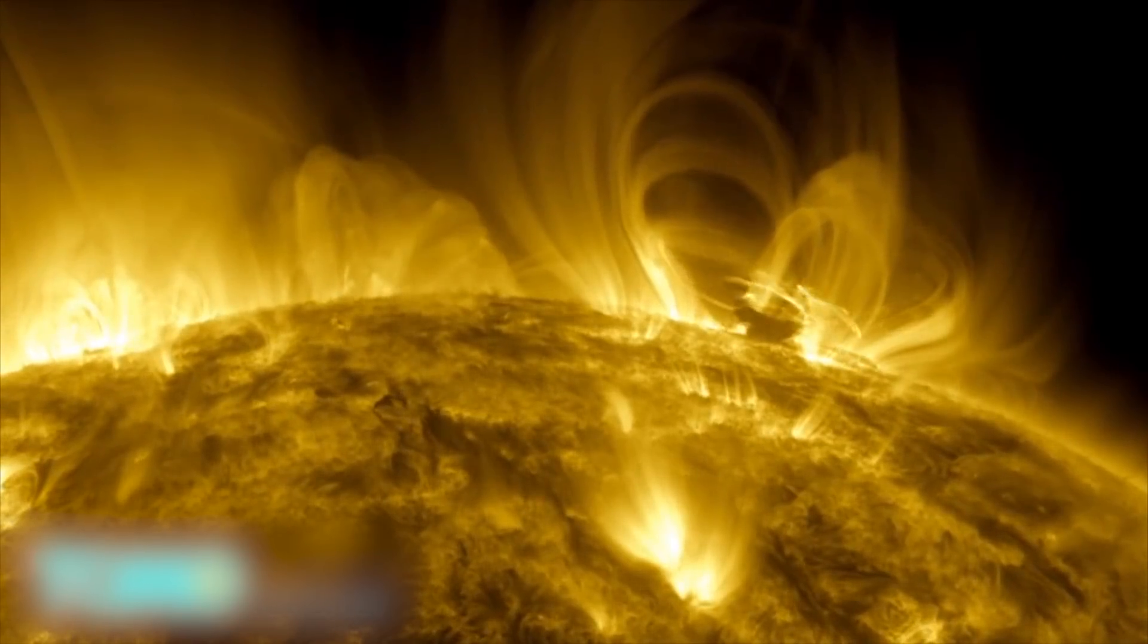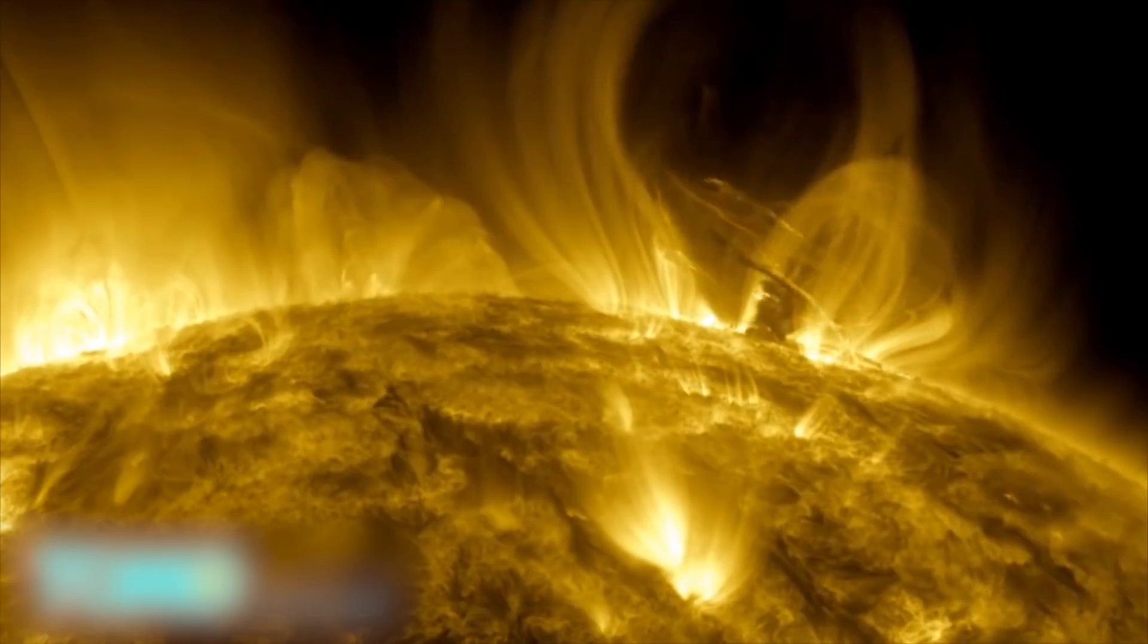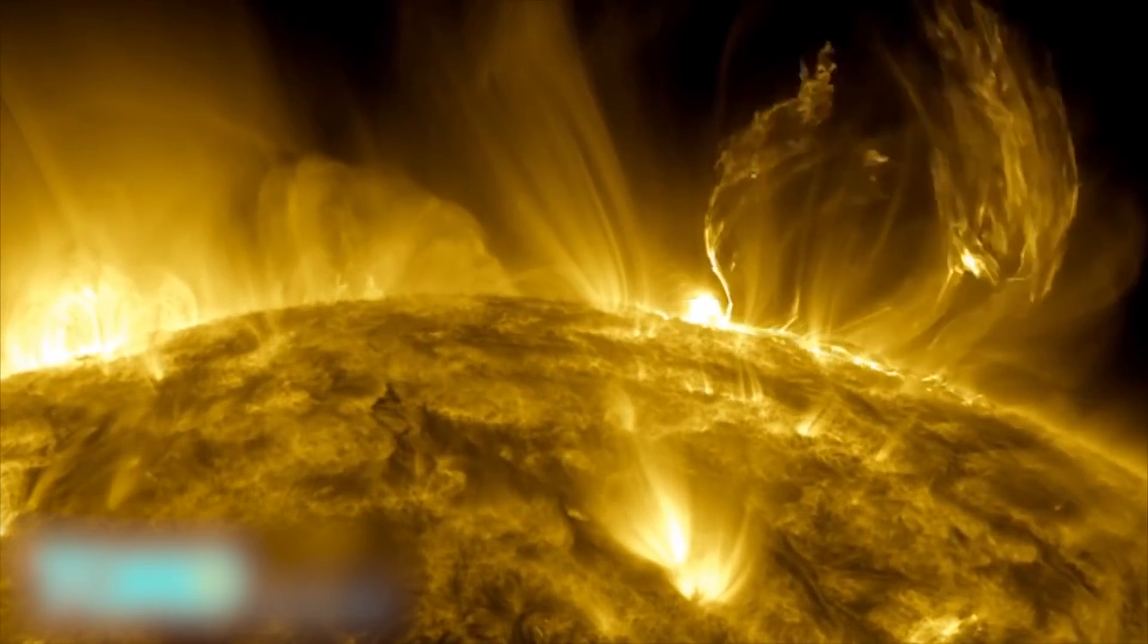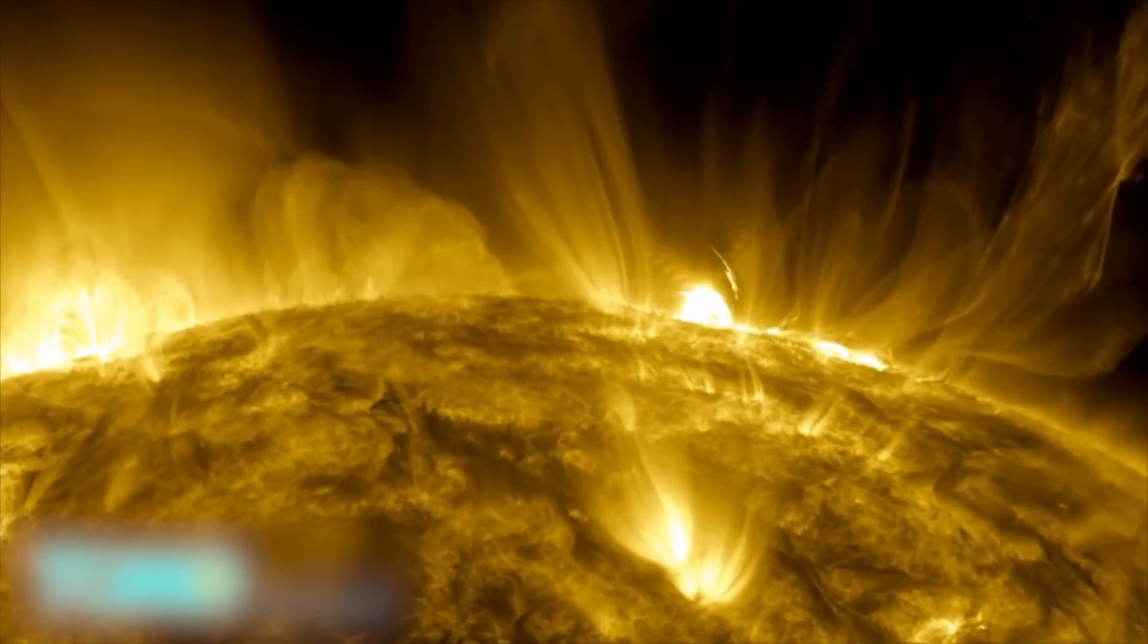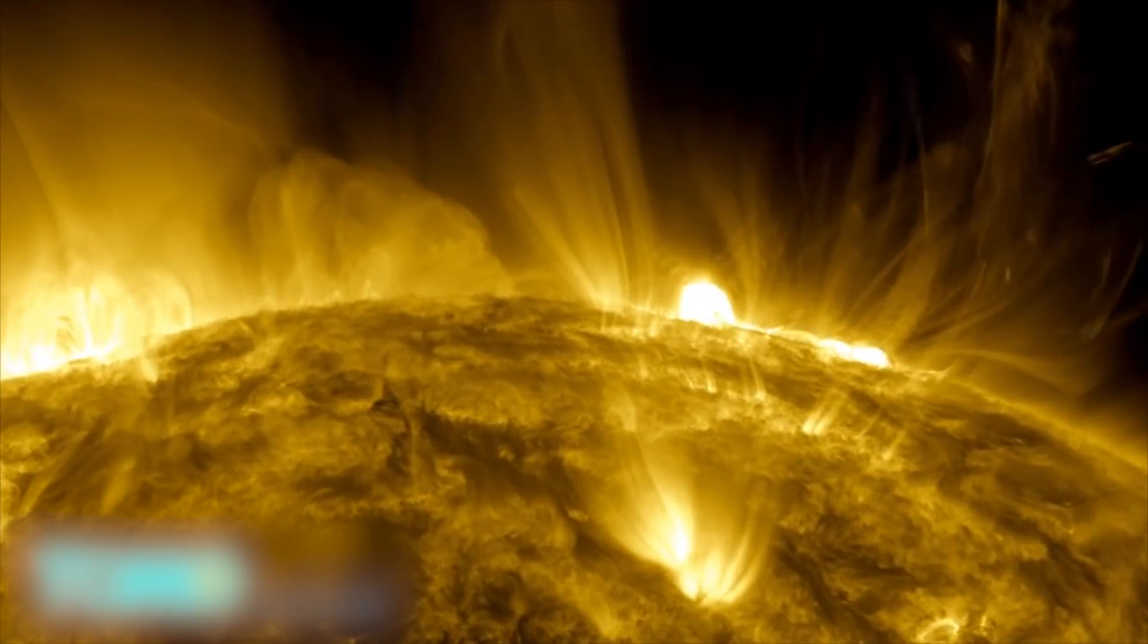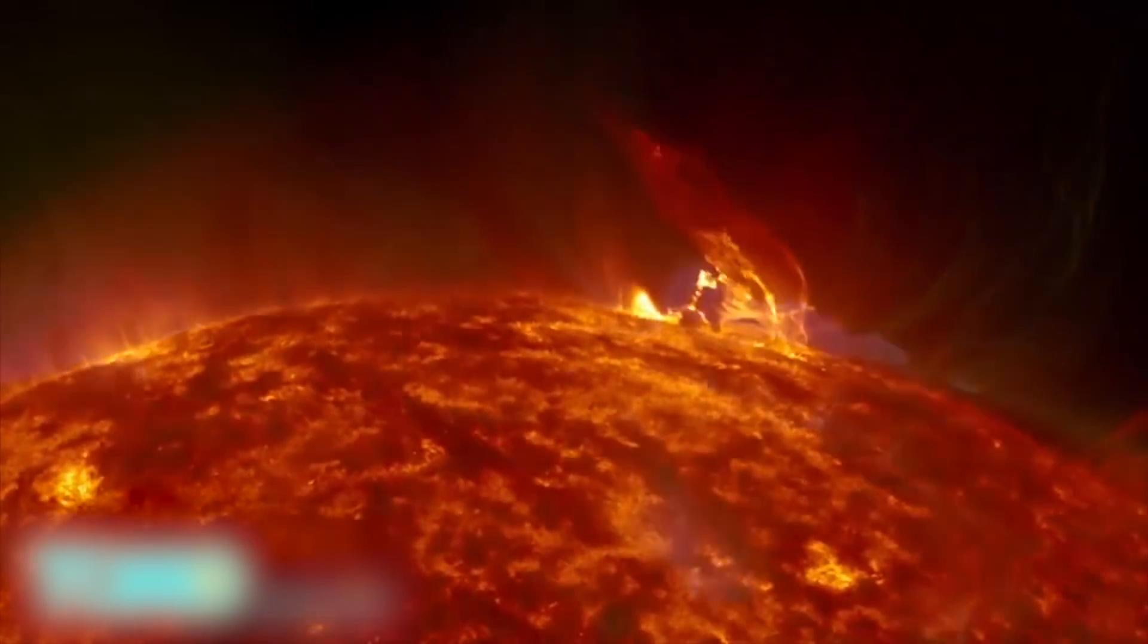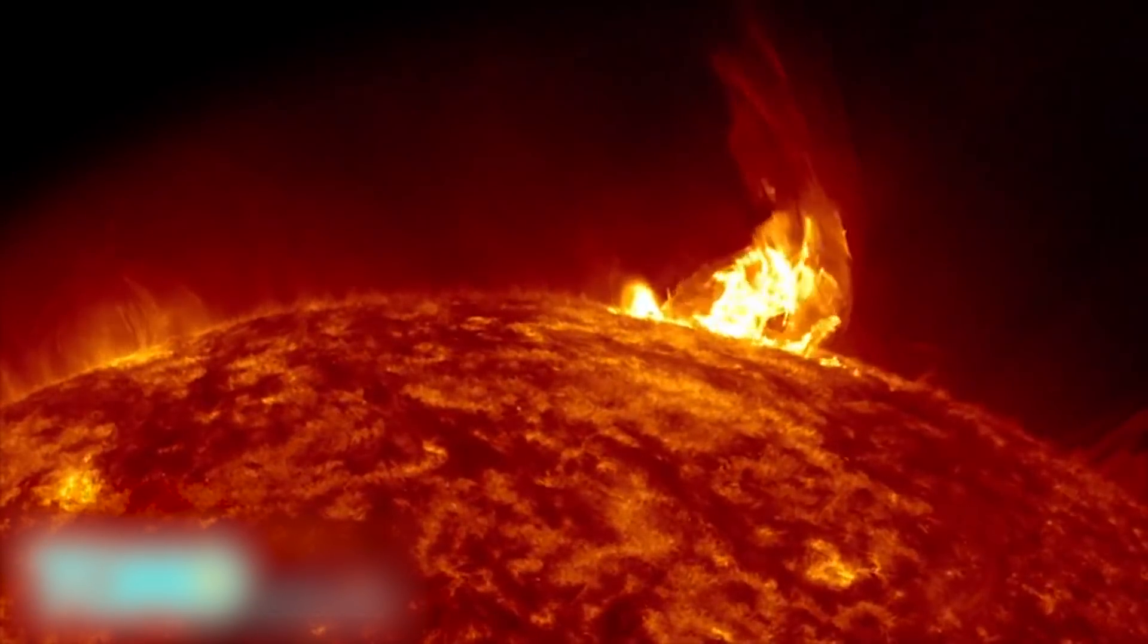NASA aims to use the SDO to understand solar activity like coronal mass ejections and how they influence life on Earth. Technological systems like satellites and electrical transmissions can be disrupted by solar activity, sometimes causing massive power outages. This is the first mission for NASA's Living with a Star program.